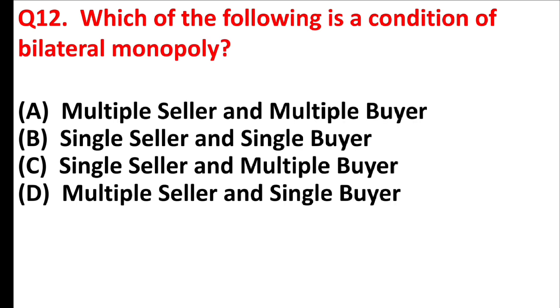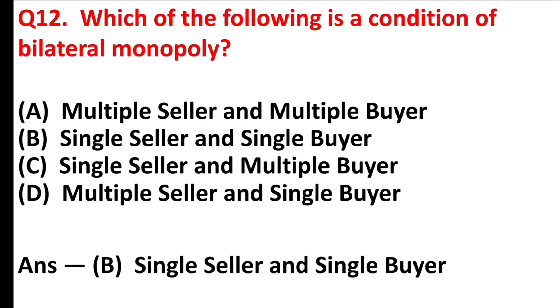Which of the following is a condition of bilateral monopoly? Answer is option B, single seller and single buyer.